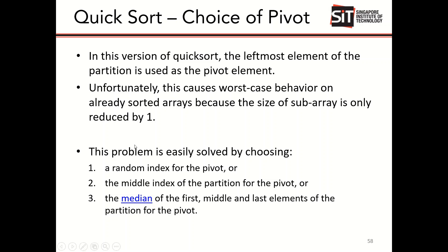You can solve the sorted and reverse-sorted worst cases by choosing a different pivot strategy — for example, choosing the middle index of the partition as the pivot, or using the median of the first, middle, and last elements. This means you take the first, middle, and last values, sort them, and use the median of those three as the pivot value.